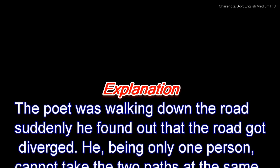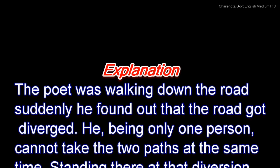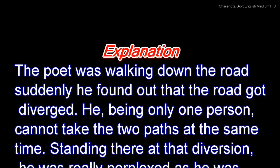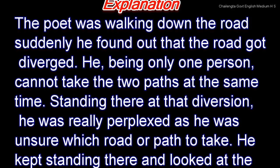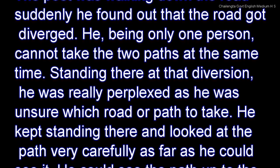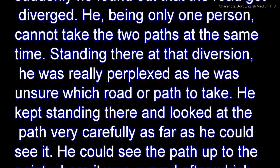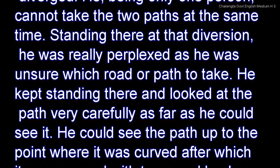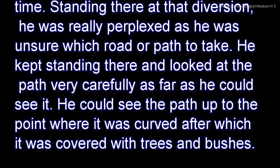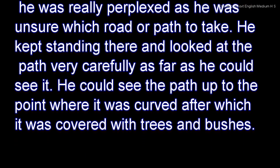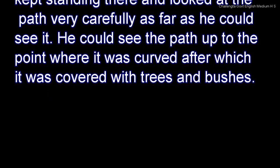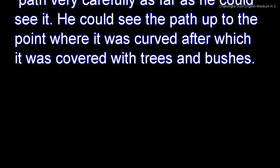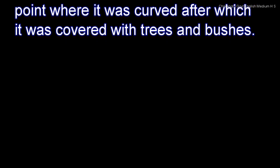The poet was walking down the road. Suddenly, he found that the road diverged. Being only one person, he cannot take two paths at the same time. Standing there at the diversion, he was really perplexed as he was unsure which road or path to take. He kept standing and looked at the path very carefully, as far as he could see — up to the point where it curved, after which it was covered with trees and bushes.